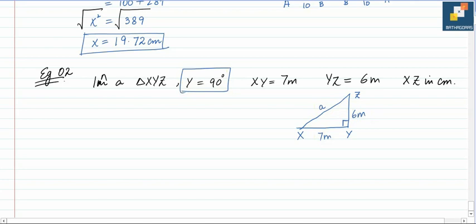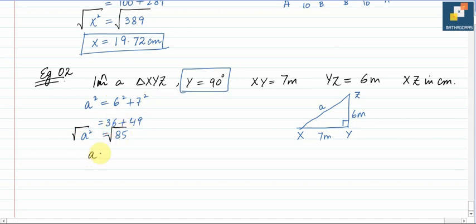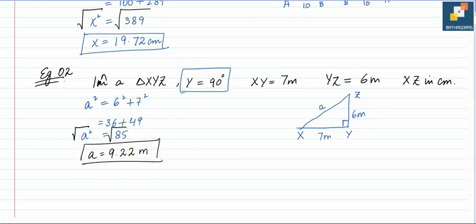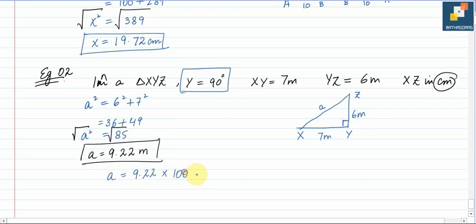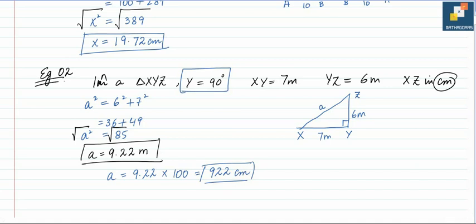Since it is a right angle triangle, we can apply Pythagoras theorem. It will be a squared equals 6 squared plus 7 squared. Now 6 squared is 36, plus 7 squared is 49. So 36 plus 49 equals 85, equal to a squared. Taking root on both sides, a equals 9.22 meters. But the question says give your answer in centimeters, so to convert meters into centimeters, multiply by 100. A equals 9.22 multiplied by 100, equals 922 centimeters. If it is mentioned in the question to convert your answer, you must do it, otherwise it will be a deduction of one mark.